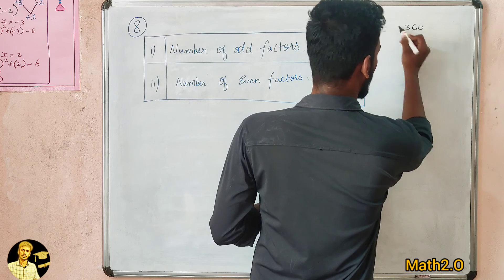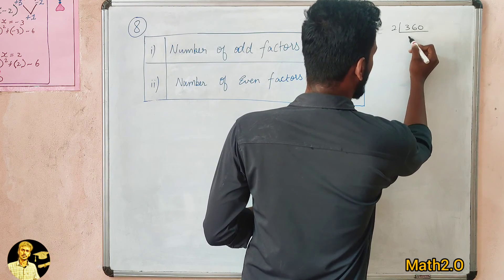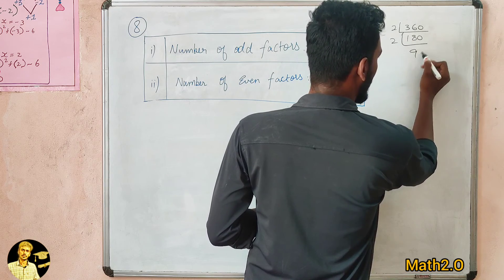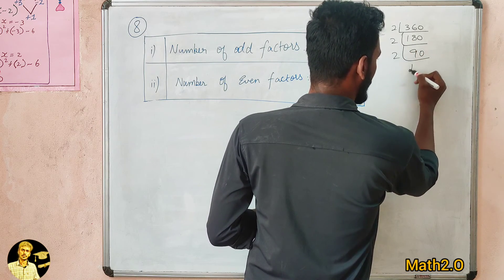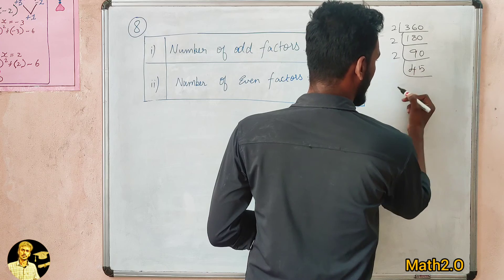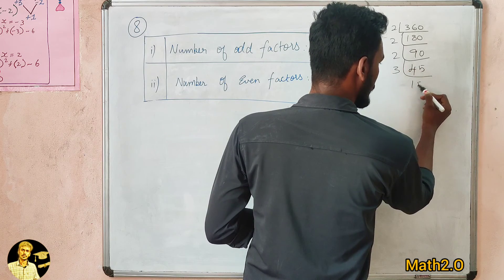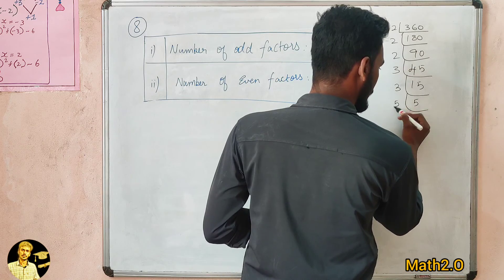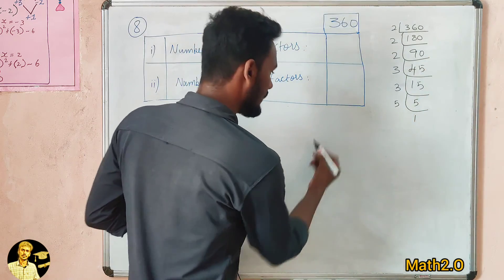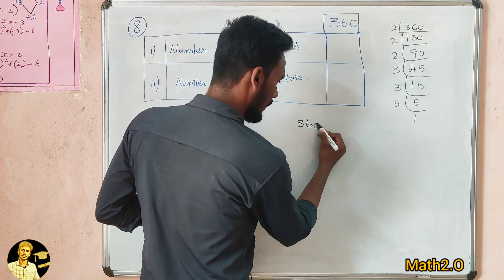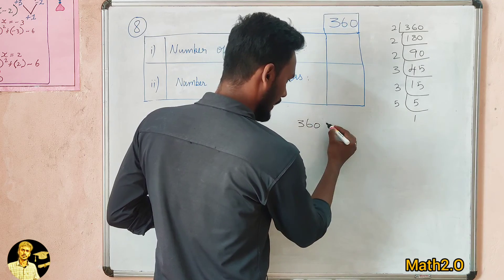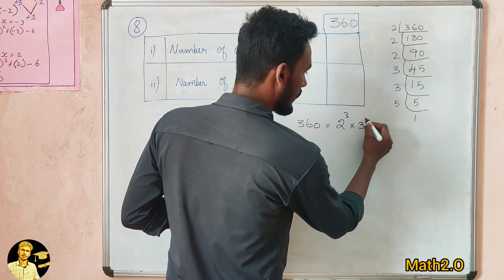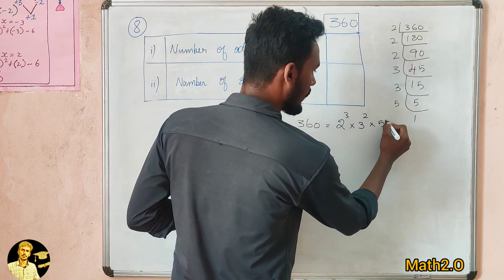360 — to find out the prime factorization. First, 2 times gives 180. Again, 2 times gives 90. Again, 2 times gives 45. Again, 3 times gives 15. Again, 3 times gives 5. And 5 times gives 1. So, 360 can be written as 2 power 3 into 3 power 2 into 5 power 1.